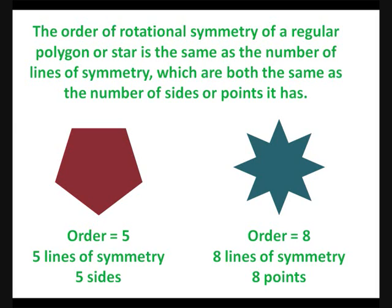For a pentagon, the order is 5, it has 5 lines of symmetry, and 5 sides. For this 8-pointed star, the order is 8, it has 8 lines of symmetry, and it's got 8 points.